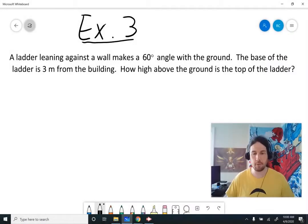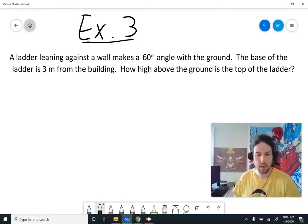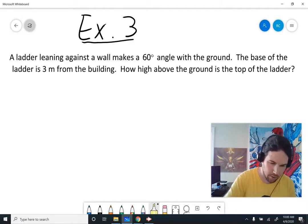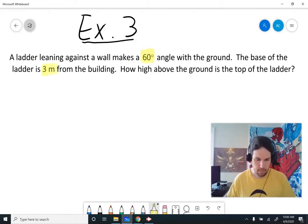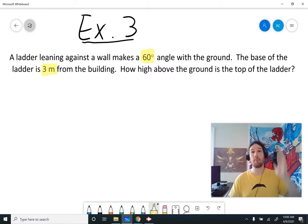In our third example of right triangle trigonometry word problems, we have a ladder leaning against a wall and making a 60-degree angle with the ground. The base of the ladder is 3 meters from the building. How high above the ground is the top of the ladder? So we're basically figuring out how tall the building is that the ladder is leaning against.